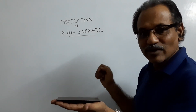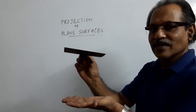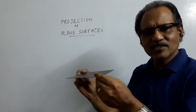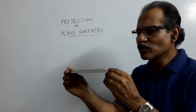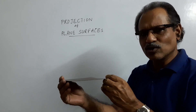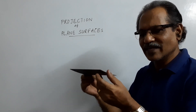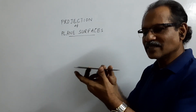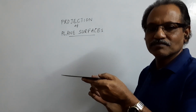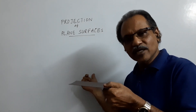If the lamina lies on HP, the plan will be true shape and the elevation will be a line on the XY line. If it is above HP, the plan will be a similar shape and the elevation will be a line above XY. The orientation can change but the shape will not change. The orientation of the object and the plan will change, but the elevation will be a line. When the lamina is parallel to HP, it is perpendicular to VP.